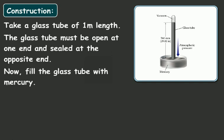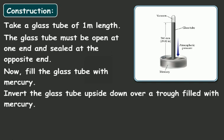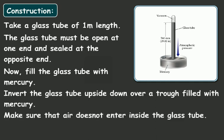Now fill the glass tube with mercury. Then invert the glass tube upside down over a trough filled with mercury. Make sure that air does not enter inside the glass tube. Your mercury barometer is ready.